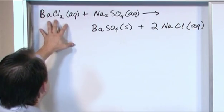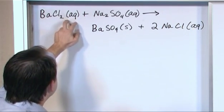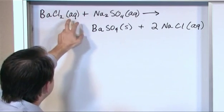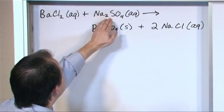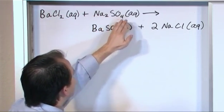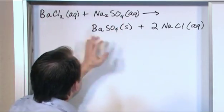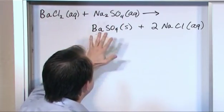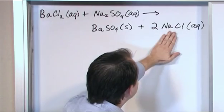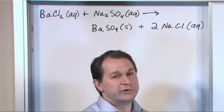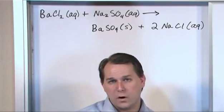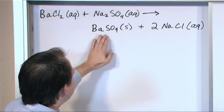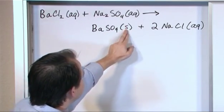This is an aqueous solution so it's dissolved in water, that's what aqueous means. We're adding it to Na2SO4, that's also an aqueous solution, and when we do this and the reaction proceeds we get two products. One of them is sodium chloride in aqueous solution, that just means salt dissolved in the water. This one is BaSO4, this one is a solid.